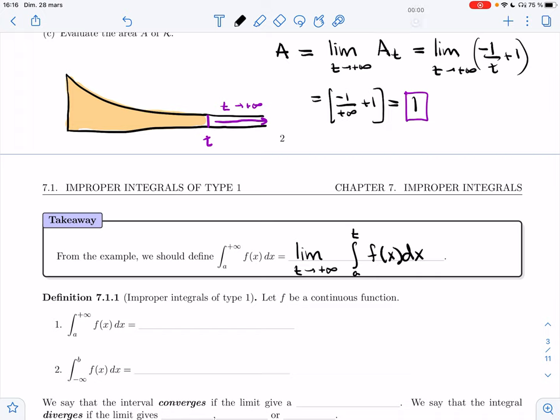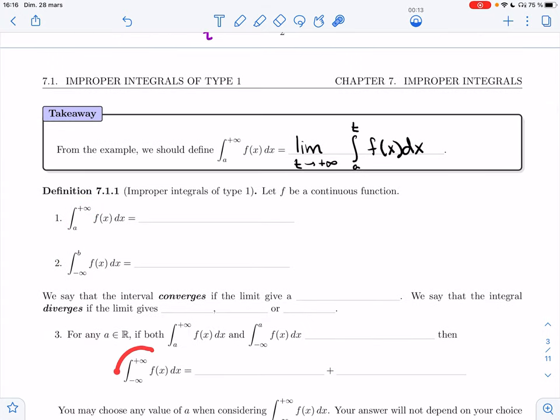So in the next video, we'll look at the definition. We'll define it for this type of integral, so a to infinity. We'll also do it in a similar way for minus infinity to b, and then we'll also look at what to do if both bounds are infinite. And then we'll start doing examples.